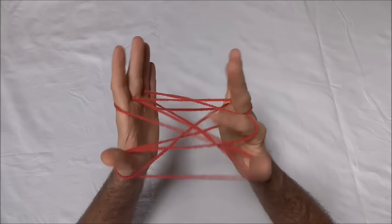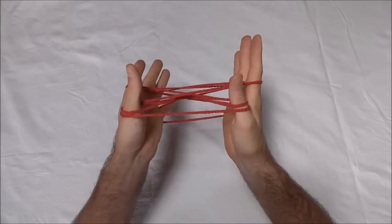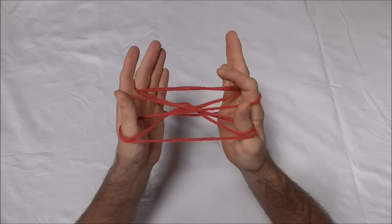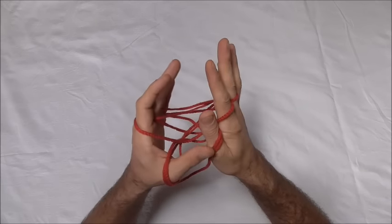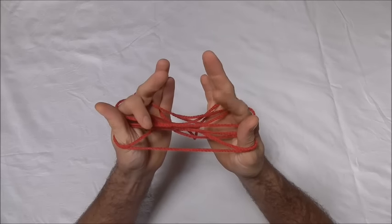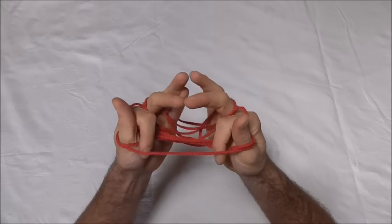And then you'll notice there's this straight string here across our thumbs. We want to take that off our thumbs and leave the other thumb loops on, so I'm just going to use my pointer fingers to lift that off.